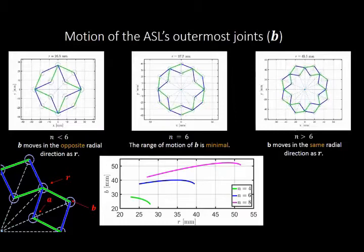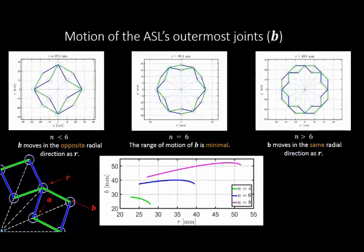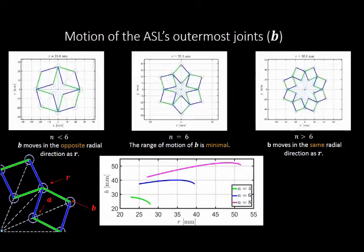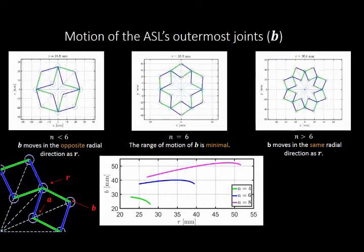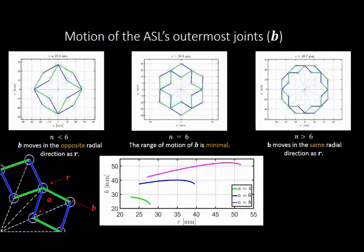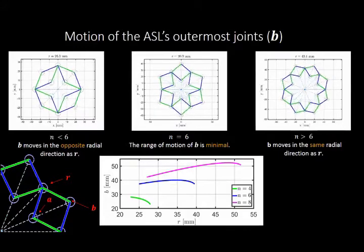In particular, this parameter has a noteworthy effect on the motion of the outermost joints B. The three cases simulated here illustrate the motion of B with respect to the linkage radius R.